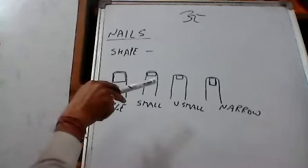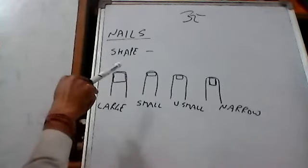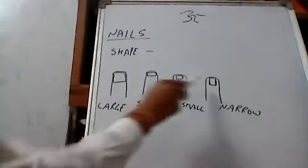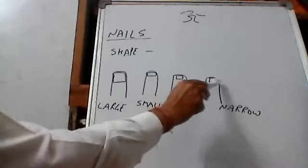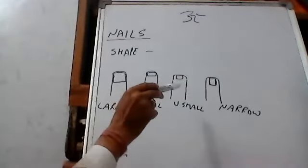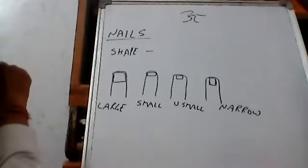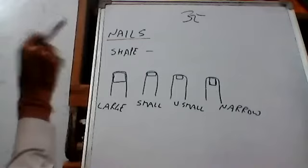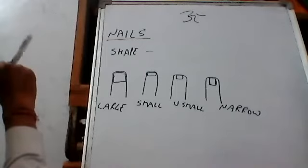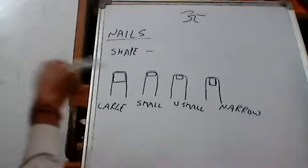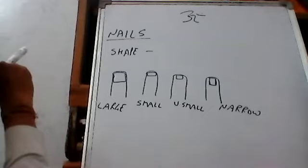Fourth kind of nail is narrow nail. It looks long but it doesn't have the width. Both sides you can see small flesh. So in the finger it looks like a little narrow, long. In some books they also write it as an almond shaped nail.